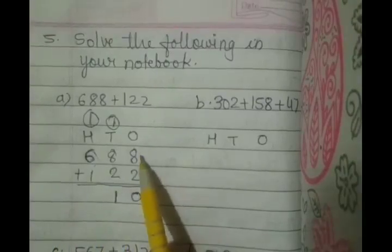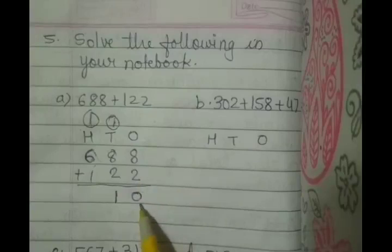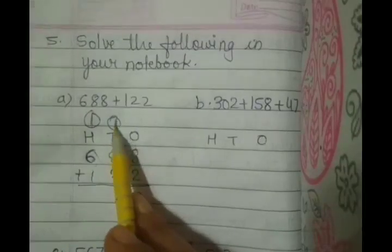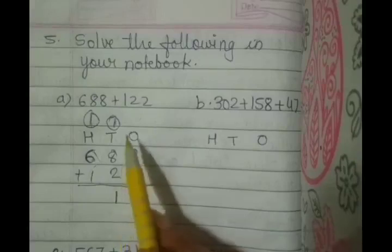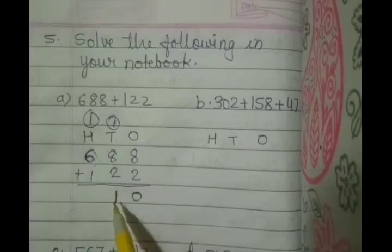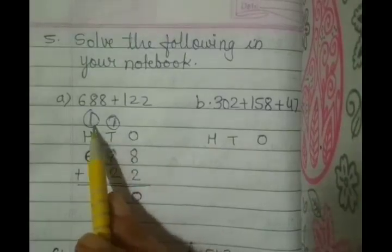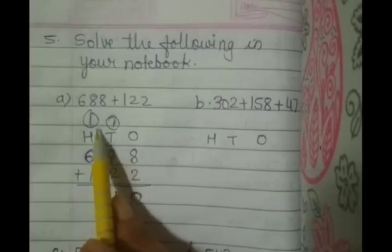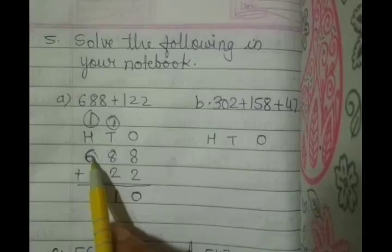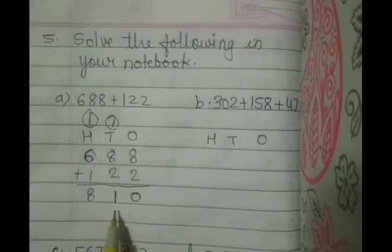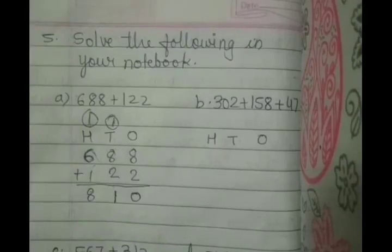Start with ones. 8 plus 2, 10. We write 0 because we got the answer 10, so 1 we will carry forward to tens column. Now here 1 plus 8, 9 plus 2, 11. We will write 1 here and 1 we will carry forward towards the hundreds column. Now here 1 plus 6, 7 plus 1, 8. So our answer is 810.